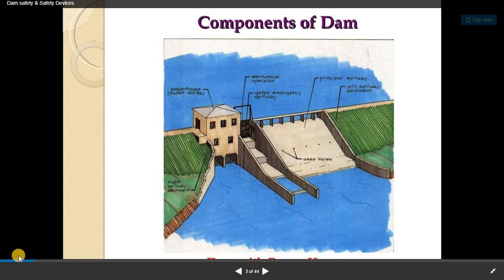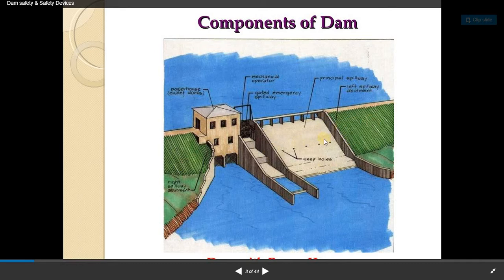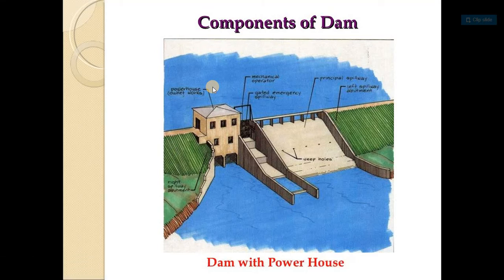Before discussing safety devices and instrumentation, we need to know the components of a dam. Looking at a dam structure, we see the downstream side and the upstream side where water is stored. The spillway shown is a gated spillway operated by a mechanical operator. Ungated spillways are also shown. The green grassy areas represent the left and right abutments of the dam.